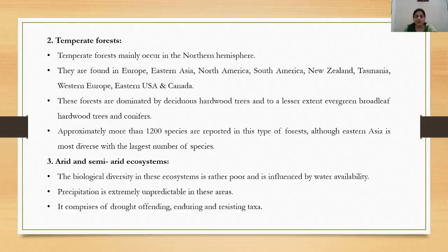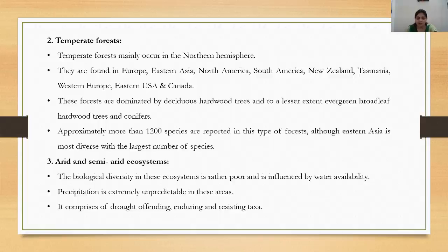The third type is the arid and semi-arid ecosystem. Biological diversity in these ecosystems is rather poor and is influenced by water availability, as these are regions with scarcity of water. Precipitation is extremely unpredictable in these areas, with very low and irregular rainfall. These ecosystems comprise drought-enduring and drought-resisting taxa — plants that are able to resist drought conditions.